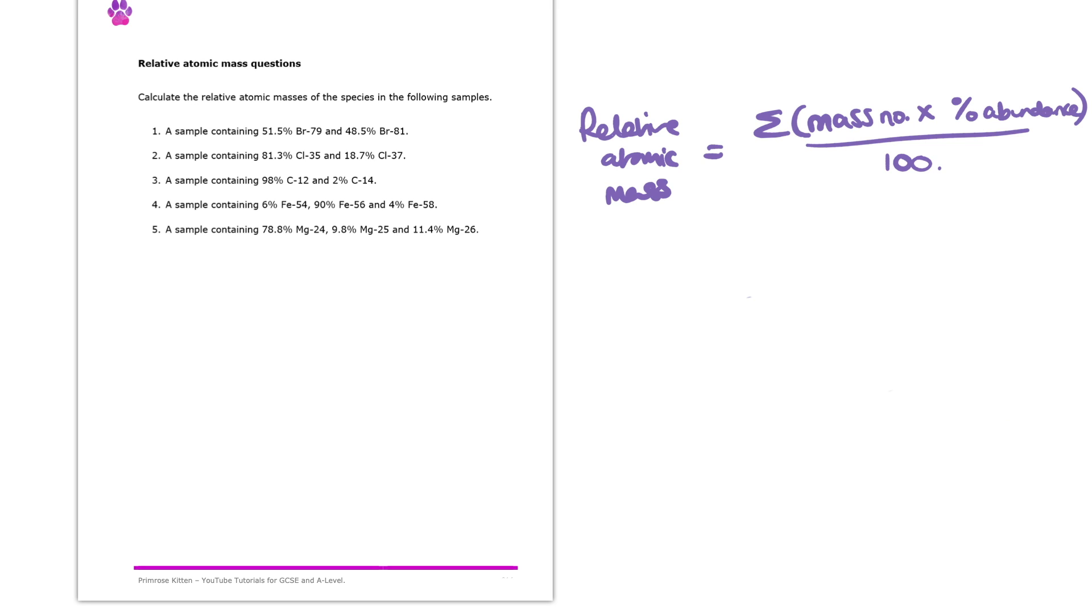So now we have a very similar question but this time we're using different isotopes of magnesium. Here we can see we've got 78.8% of magnesium-24, 9.8% of magnesium-25 and 11.4% of magnesium-26. So to work out the relative atomic mass we want to just substitute that into the equation we have here which will end up being 24 times 78.8 etc.